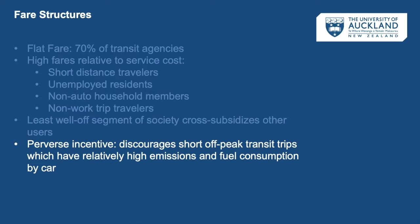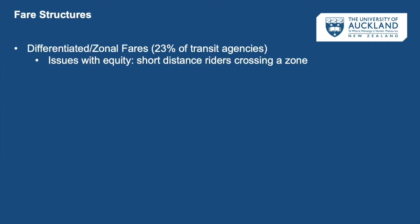In an equity sense, the least well-off segment of society ends up cross-subsidizing other users. Those most dependent on public transportation — because they have no other mode available — tend to pay more per mile than those who are employed and better off. It also discourages short off-peak transit trips, which relative to longer trips have a high emissions and fuel consumption rate.